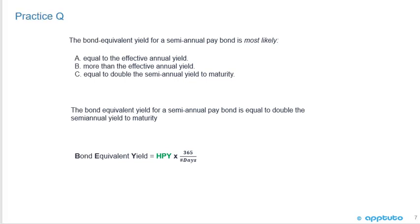The correct answer is C — the bond equivalent yield for a semi-annual pay bond is equal to double the semi-annual yield to maturity. That's something you'll cover again in fixed income. The formula, bond equivalent yield equals holding period yield times 365 over number of days, isn't really helping answer this question, but it comes up within this LOS and is covered in more detail under the fixed income section.